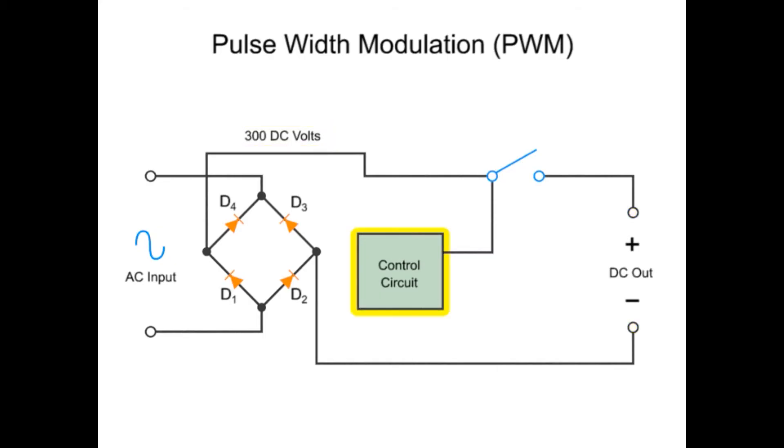A control circuit operating a DC switch turns the DC output on and off. This controller device can be an SCR or a powerful transistor.